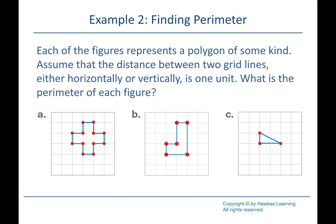Looking at grid examples where each grid mark equals one unit. For shape A, tracing and counting all sides: 1, 2, 3 ... 12 units — perimeter is 12 units. For shape B, counting around: 1, 2, 3 ... 10 units — perimeter is 10 units. We could also be given the side lengths directly and add them up; counting works the same way.